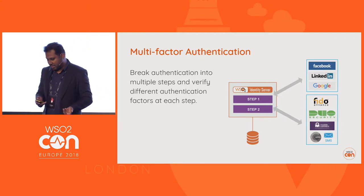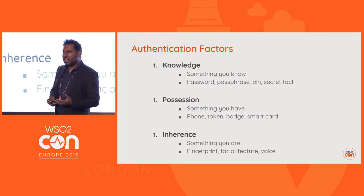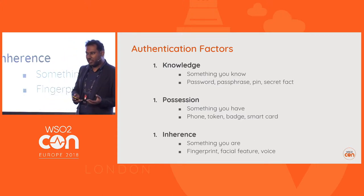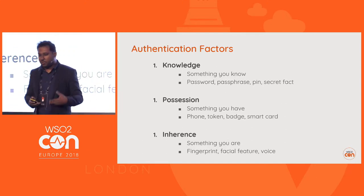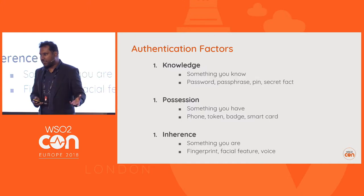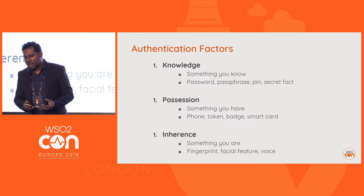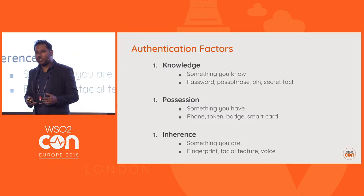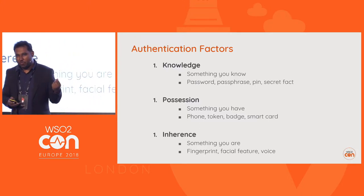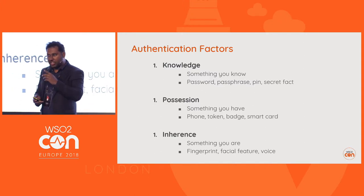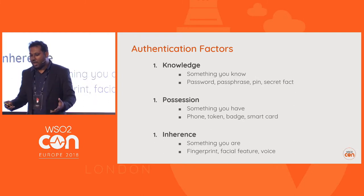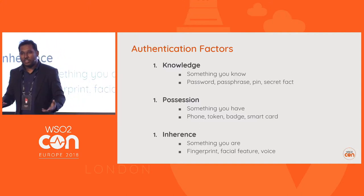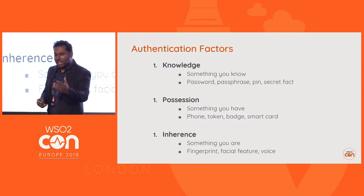So what are these authentication factors? There are three types. First, we call it knowledge — something you know. It could be a password, passphrase, PIN, or some kind of knowledge. The second factor is possession — something you have. It could be your phone, a hardware token, badge, or smart card. The third is inherence — something you are. That could be a fingerprint, a facial feature, or your voice.